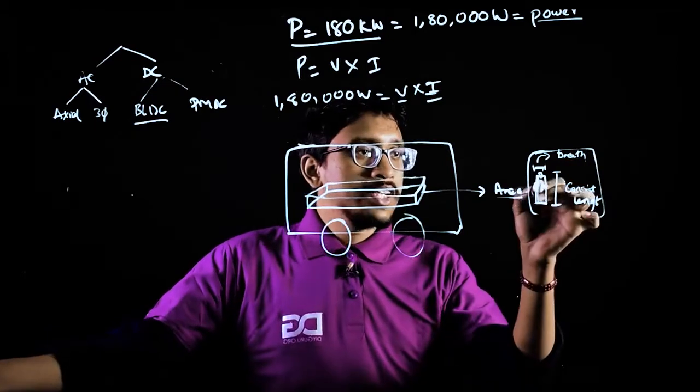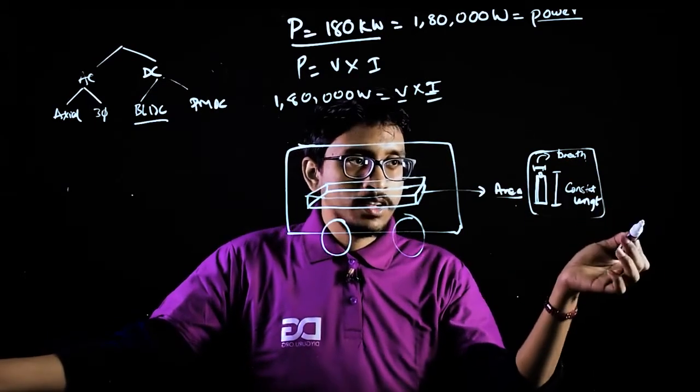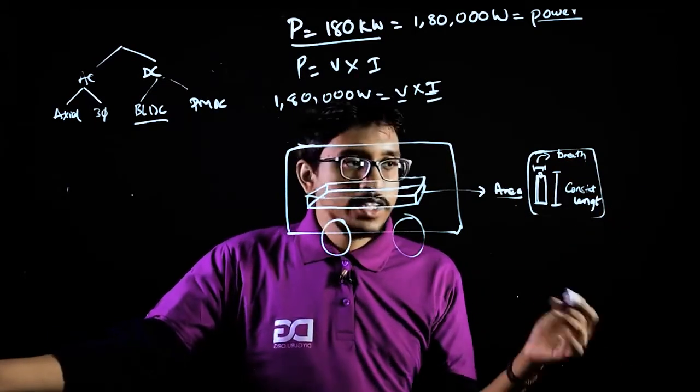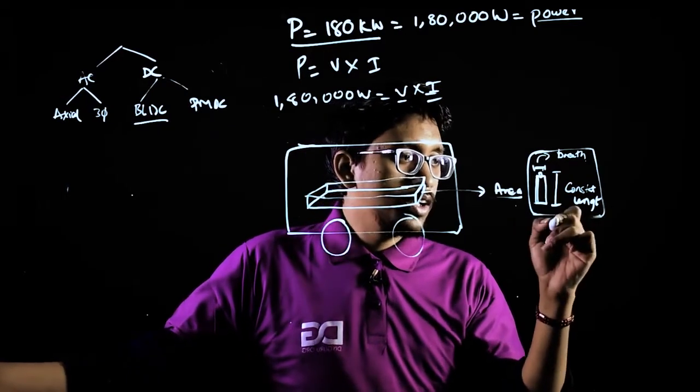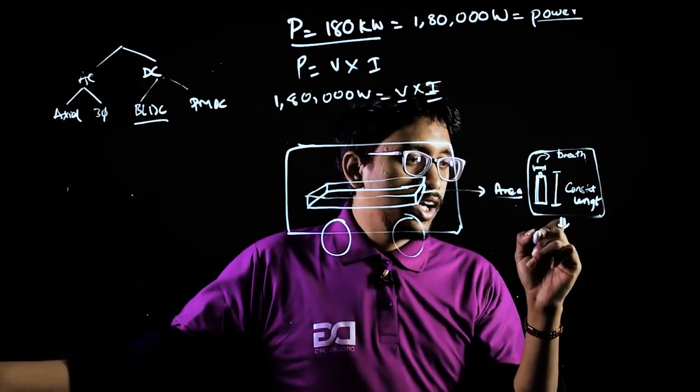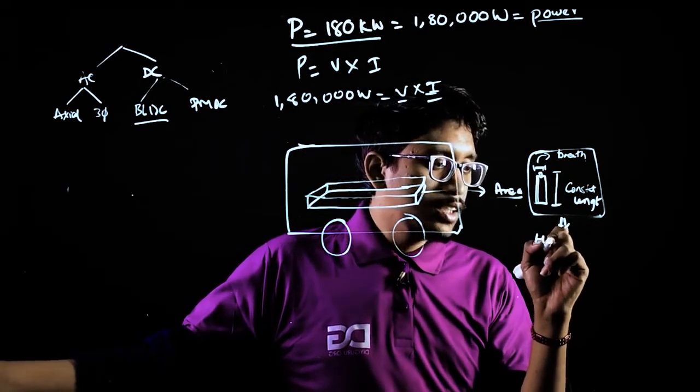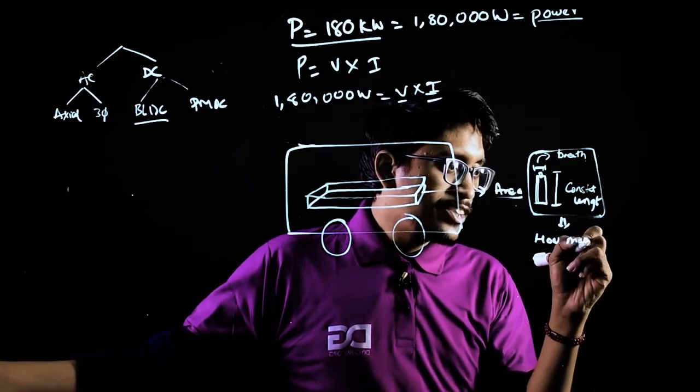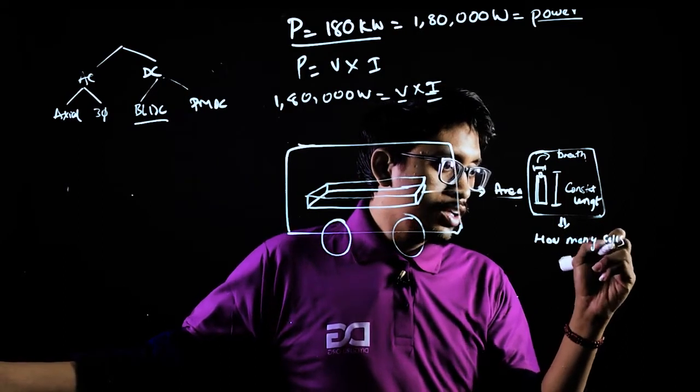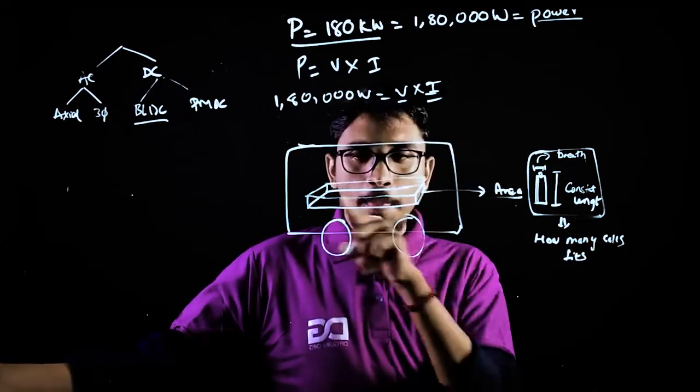So every cell has the same length and the same radius. So it is now your part to identify how many cells actually fit in it, fits this area.